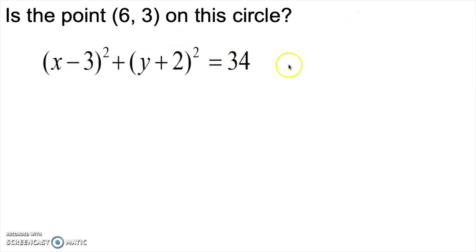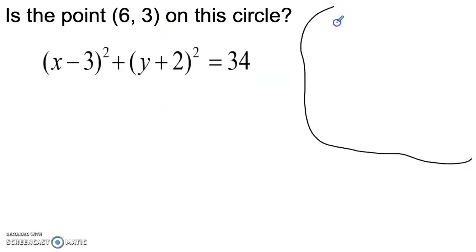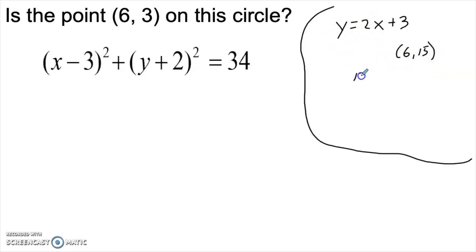In this question, we're given the equation of a circle and asked to determine if a point is on it. Think about what it means to be the equation of a line — if I asked whether (6, 15) is on the line y = 2x + 3, you'd plug in 6 for x and 15 for y. If the equation holds, the point is on the line.